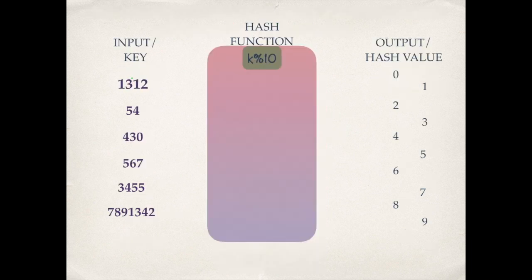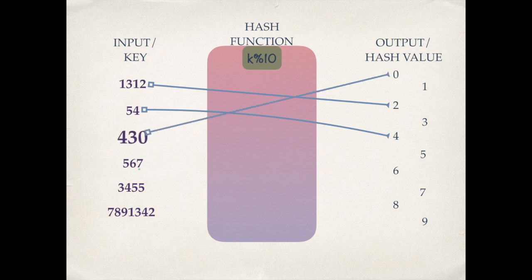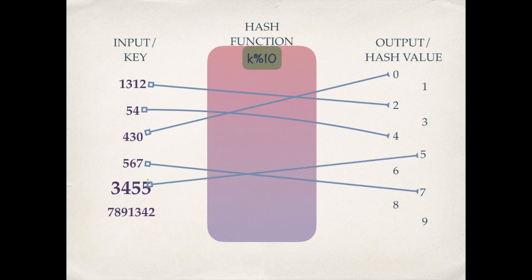For example, 1312 when divided by 10 leaves 2 as remainder. The number 54 when divided by 10 leaves 4 as remainder. For any number, when we divide it by 10, the last digit is the remainder. So 430 is mapped to 0, the next number to 7, the next to 5, and the next to 2.